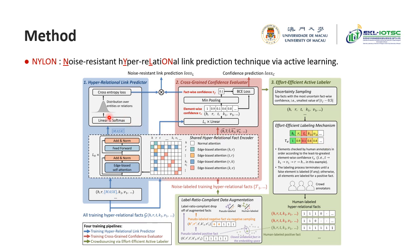The hyper-relational predictor is built on top of an attention-based self-attention network with a masked training process, where each training hyper-relational fact is weighted by the fact-wise confidence. The cross-sentence confidence evaluator is trained on noise-labeled hyper-relational facts from active labeling with a mid-handling mechanism, and evaluates both fact-wise and element-wise confidence.